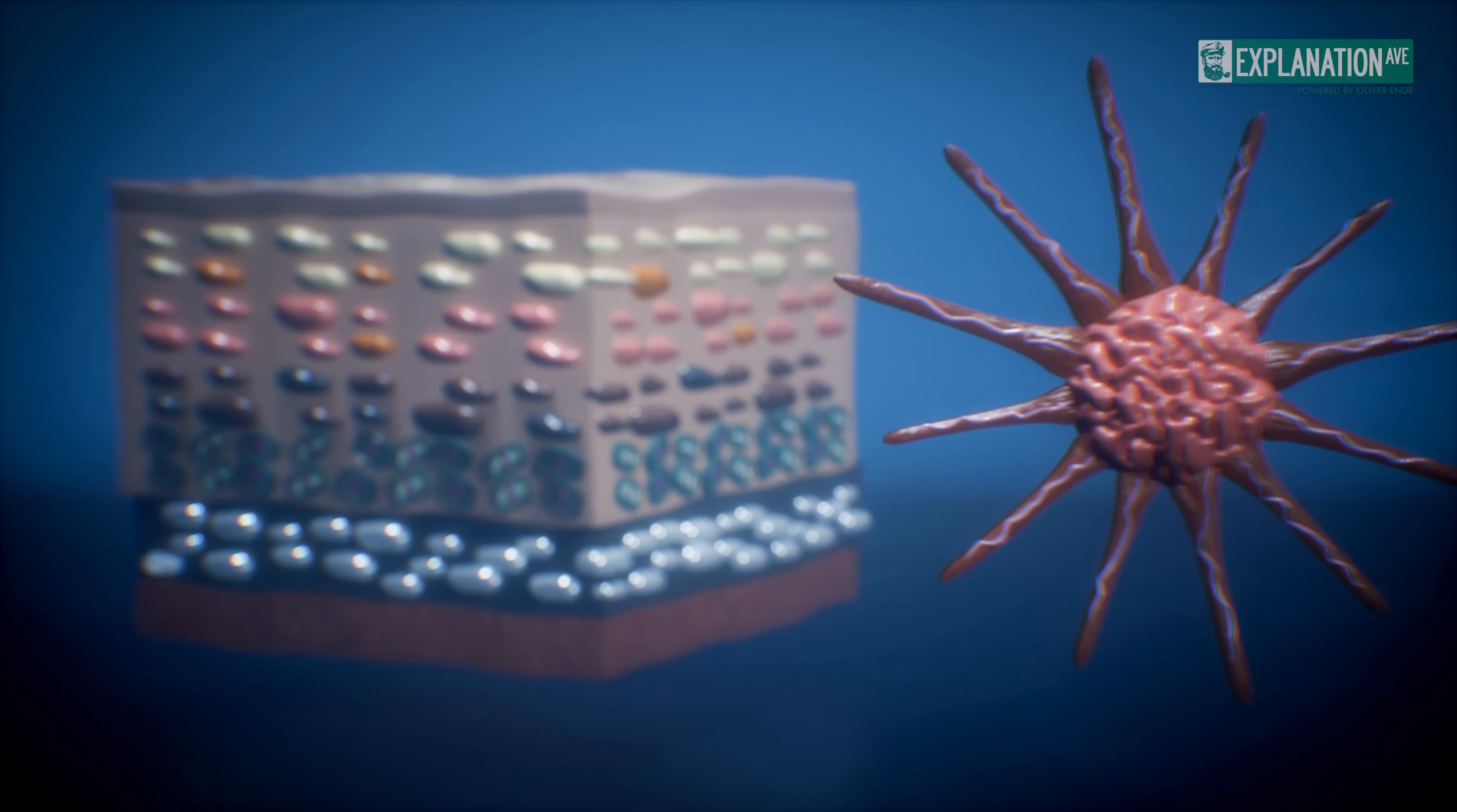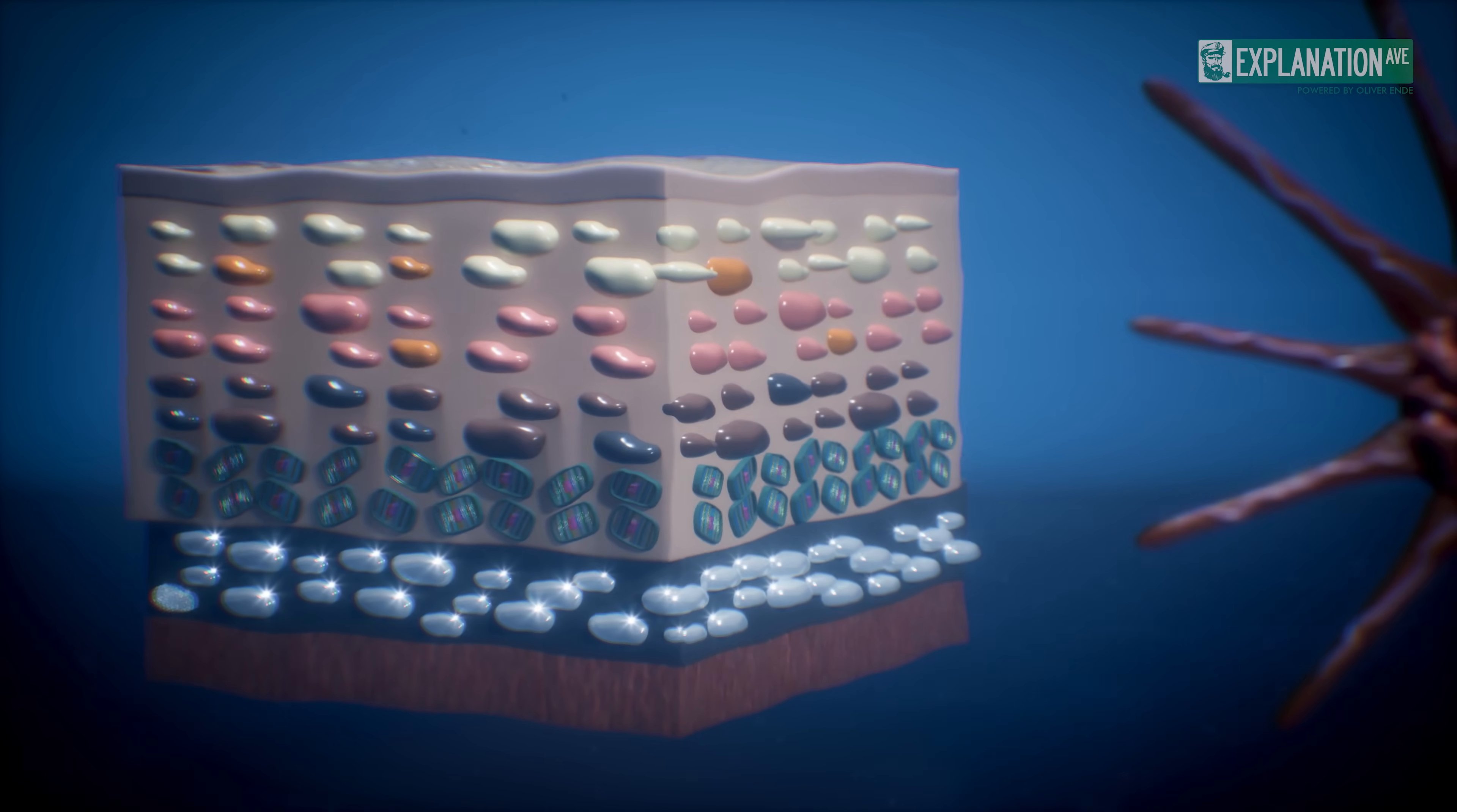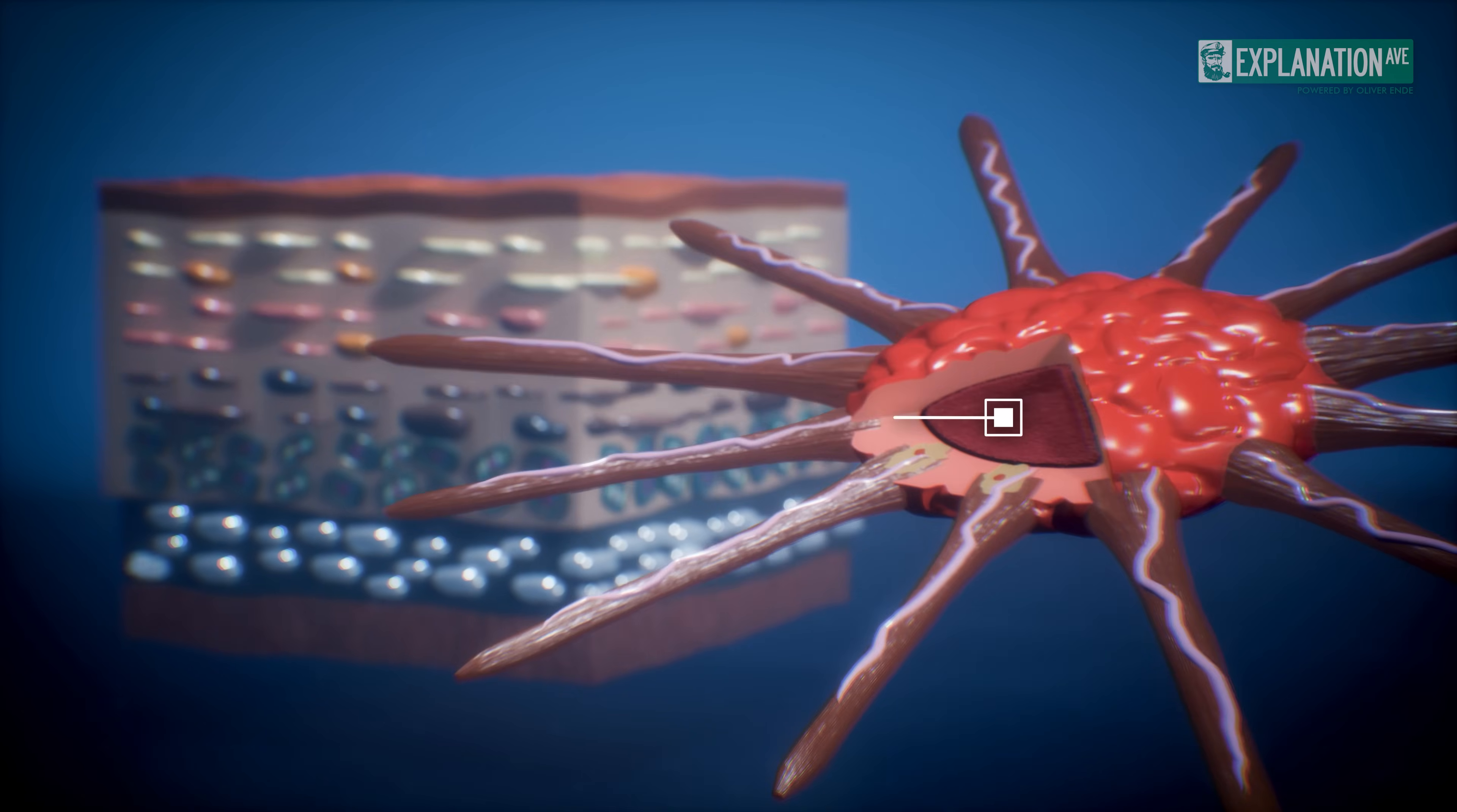Chromatophores, pigment-filled skin organs, can produce a variety of colors, including black, brown, orange, red, and yellow. They're located under the skin and change shape through muscle contraction, making the pigment visible.